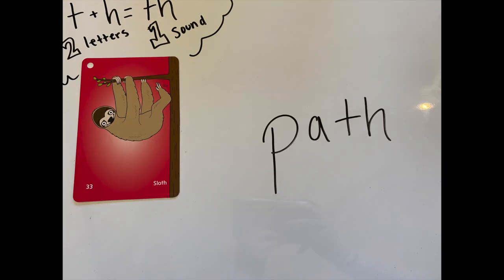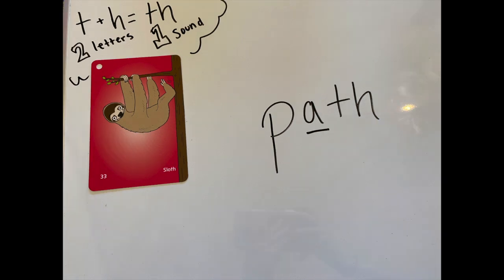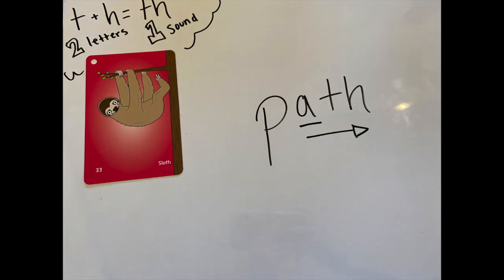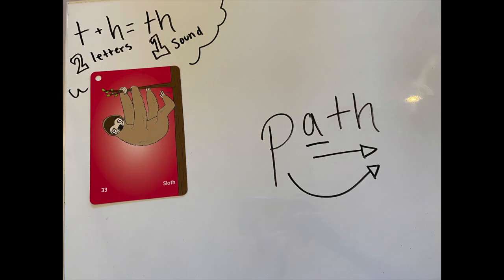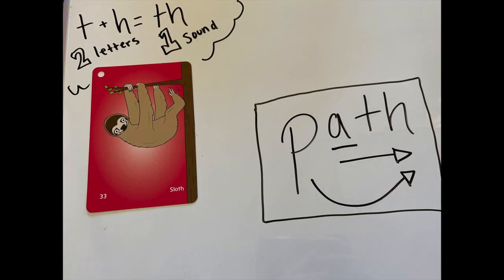Next word. Looks pretty similar to my other word. My middle vowel is A. Exactly — A, slide right, A-TH. Add the beginning sound: PATH. My word is path.